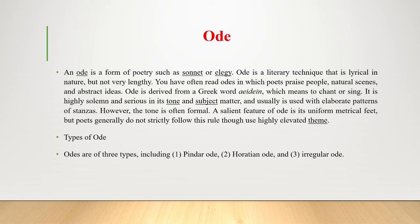There is another type: the Horatian ode, originally modeled on the matter, tone, and form of the odes of the Roman poet Horace. In contrast to the passion, visionary boldness, and formal language of Pindar's odes, many Horatian odes are calm, meditative, and colloquial. They are also homostrophic — written in a single repeated stanza form — and shorter than Pindaric odes. Examples include Andrew Marvell's 'An Horatian Ode upon Cromwell's Return from Ireland' and John Keats's 'Ode to Autumn,' published in 1820.